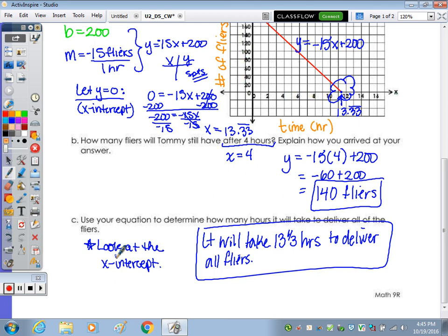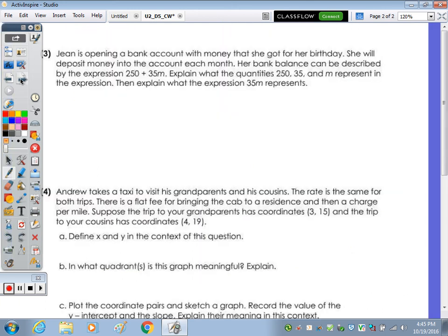Number 3. Go ahead and pause the video so you can read it, and then we will go over it together. So what does the 250, 35, and M represent, and what does the expression 35M represent? She's opening a bank account with the money that she got for her birthday. She will deposit money into the account each month. Her bank balance can be described by the expression 250 plus 35M.